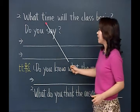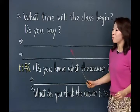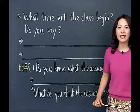接下来我们再多一个练习，在这个特别的句型的表现当中。我们来看第二个例句：What time will the class begin? 这堂课会在几点钟开始呢？又问了Do you say（你说呢），你说这堂课到底会几点钟开始呢？